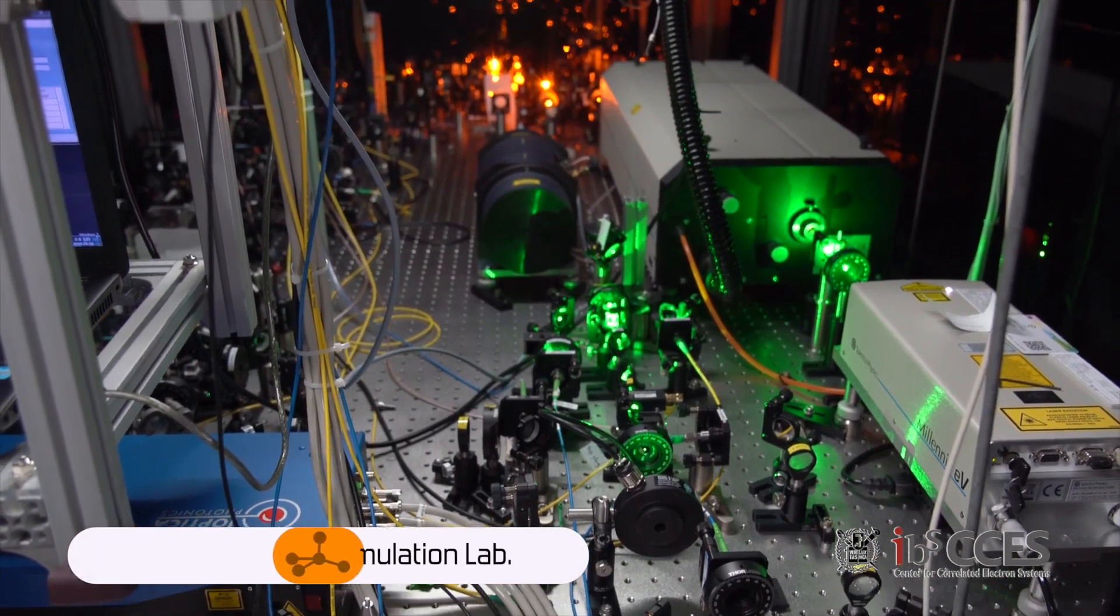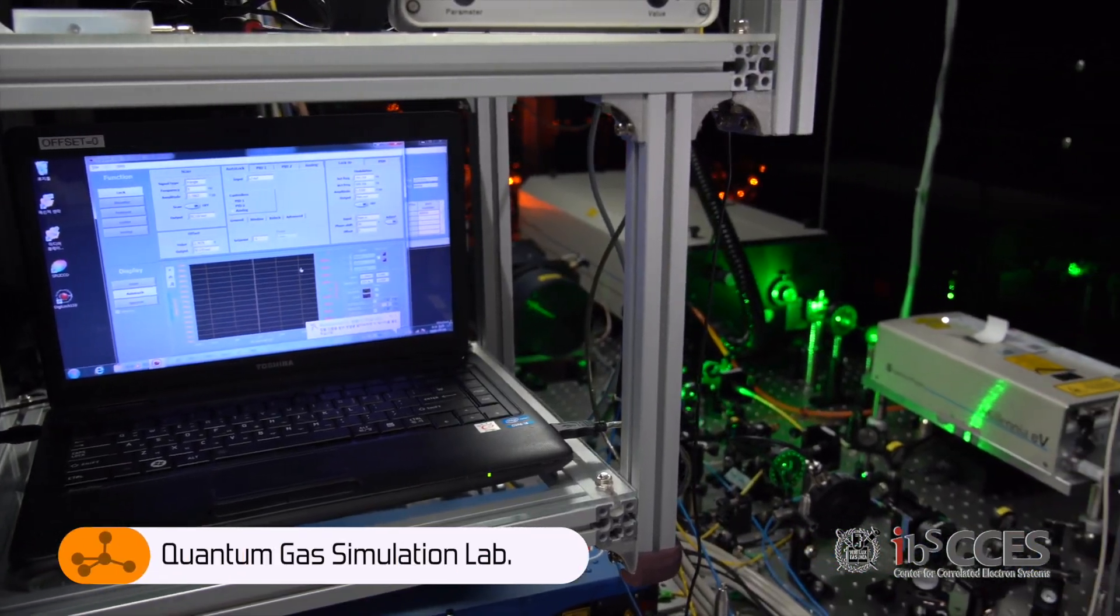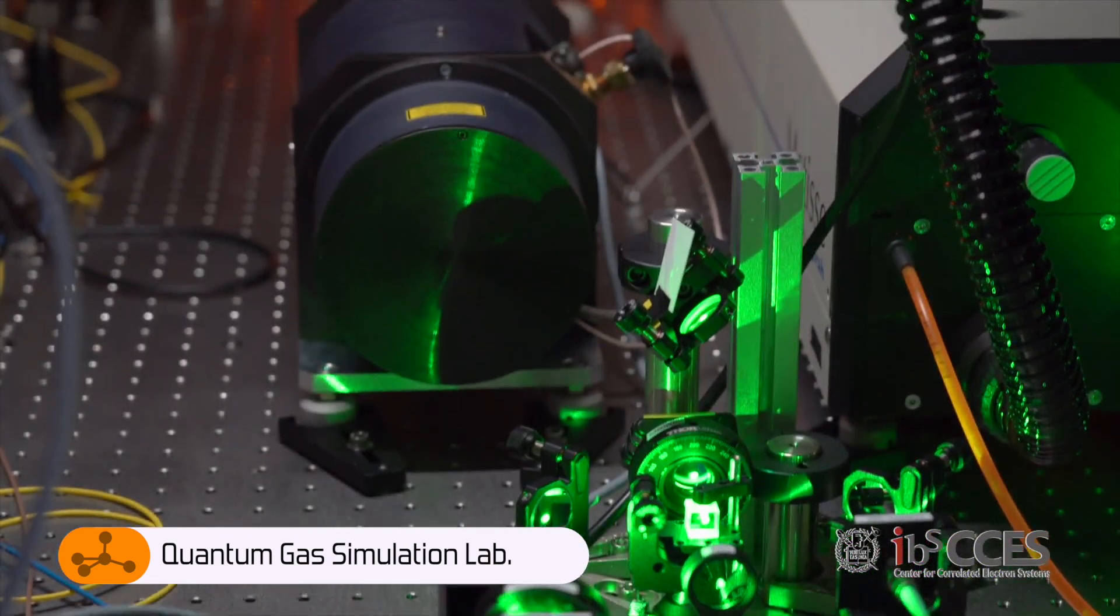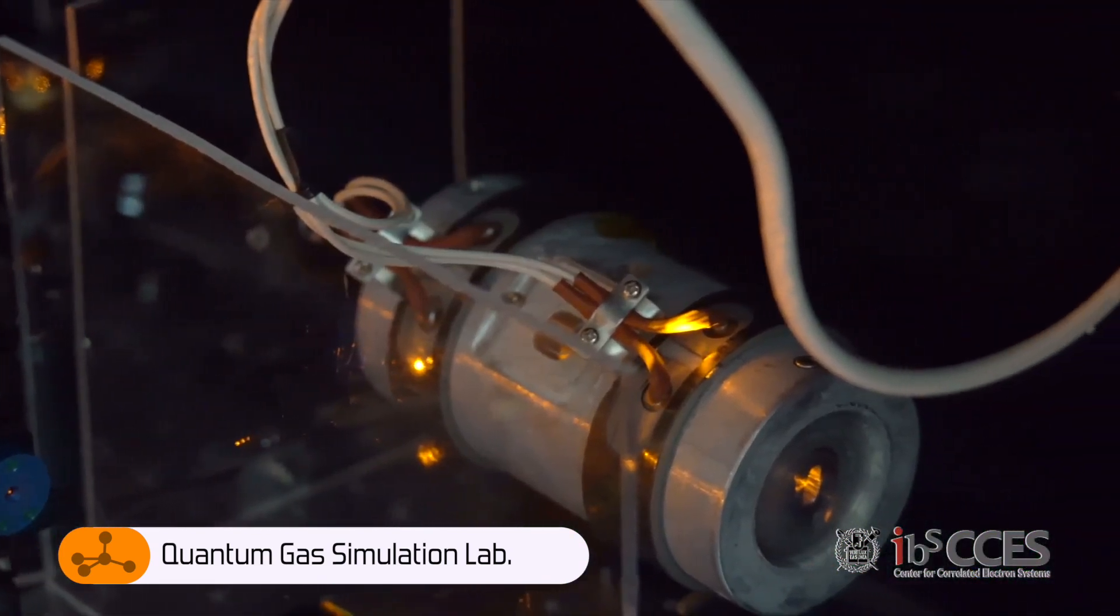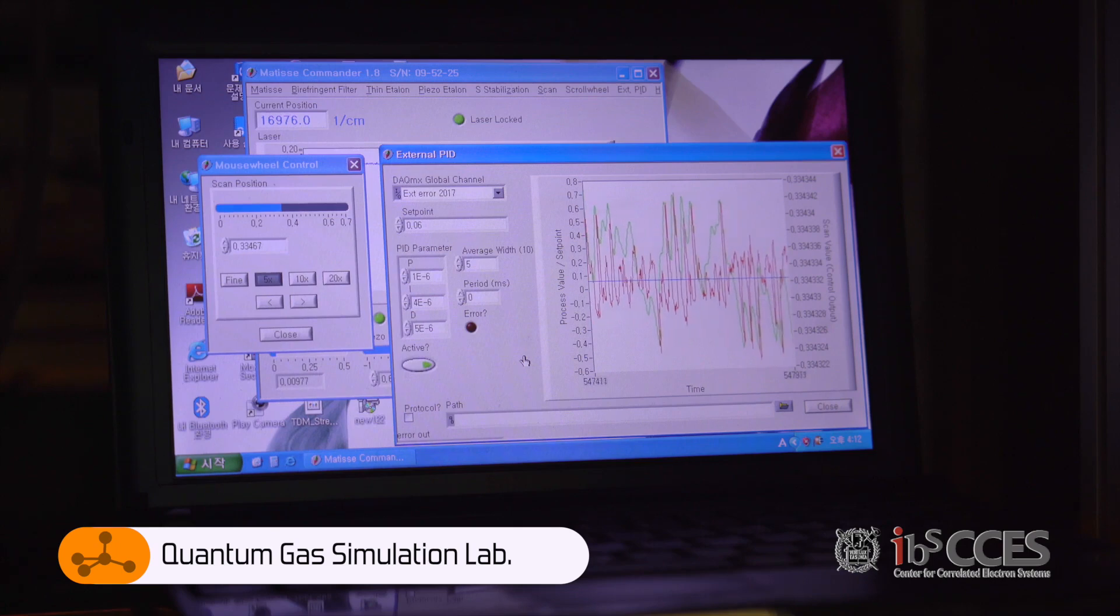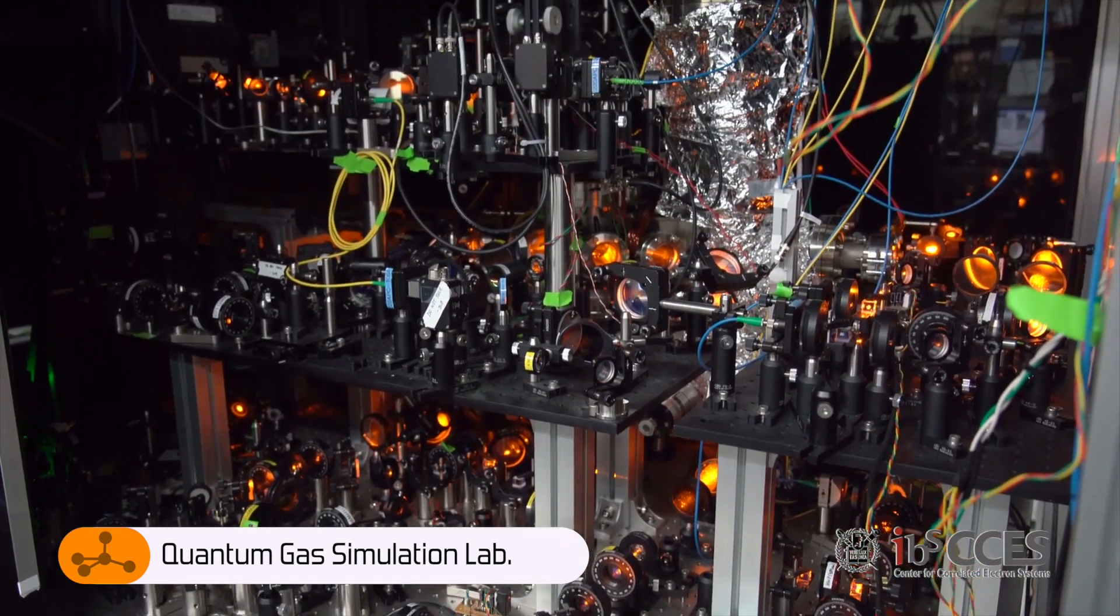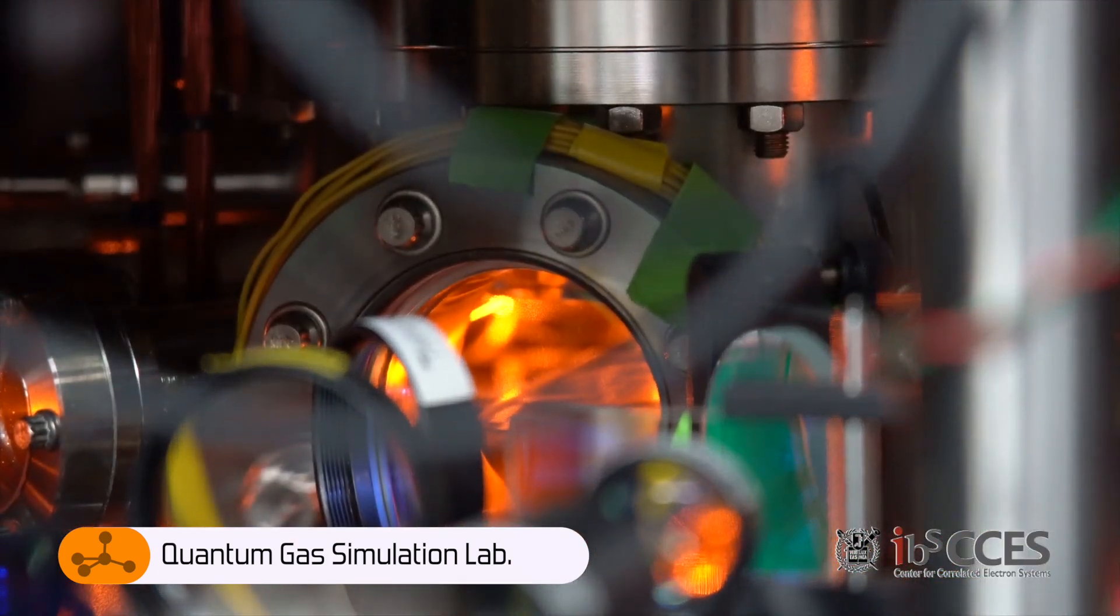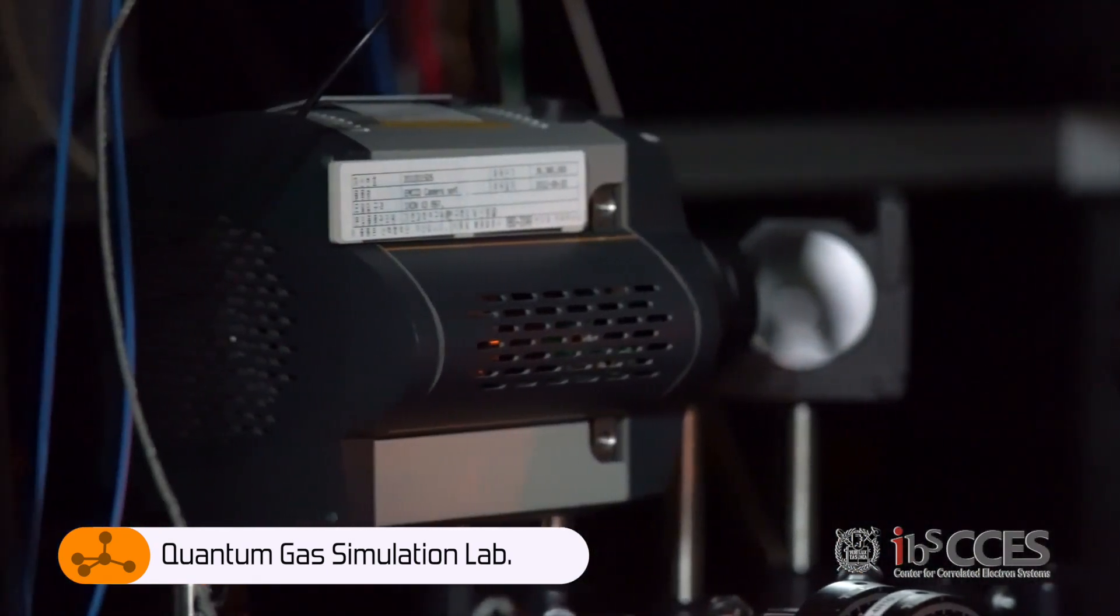Next, we introduce our quantum gas simulation team. Here, we use an ultra-high vacuum chamber and diverse lasers to trap and cool atom gas into a strongly correlated state. We generate a hot atomic beam and transfer the atoms to a main chamber, where the temperature is lowered to a few tens of micro-Kelvin using lasers of Zeeman slower and magneto-optical trap. Then, the atoms are further cooled to a few hundred nano-Kelvin using evaporative cooling technique and magnetic trap and optical dipole trap.